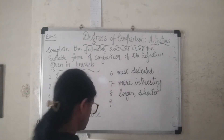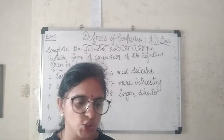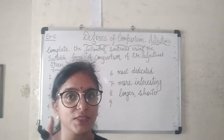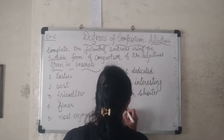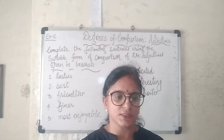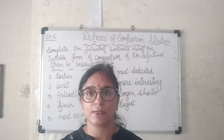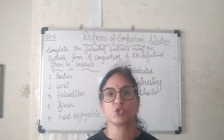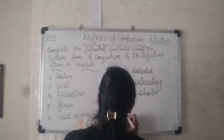Sentence 9: 'Which is the ___ planet in the solar system?' The adjective is 'large' — the superlative is 'largest'. Sentence 10: 'Deepak Prasad is the ___ actor on TV.' The adjective is 'handsome' — with 'the' before the blank, the answer is 'most handsome'.